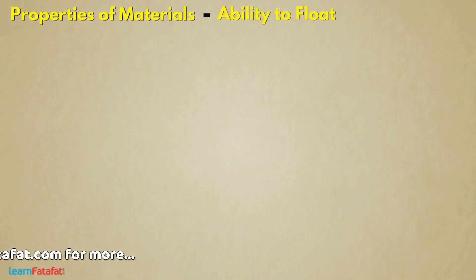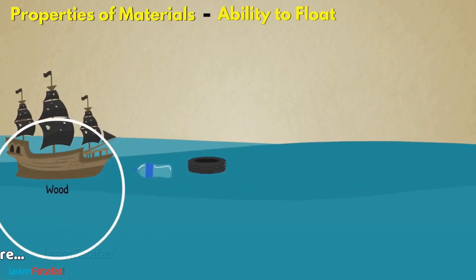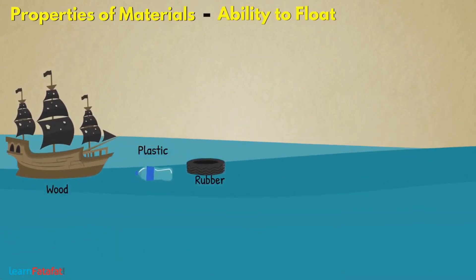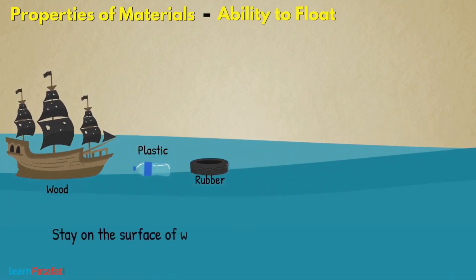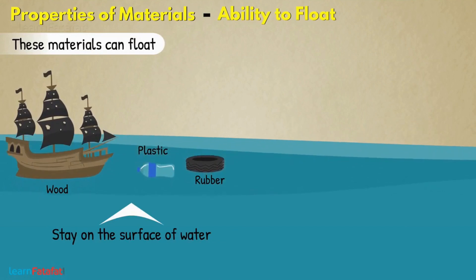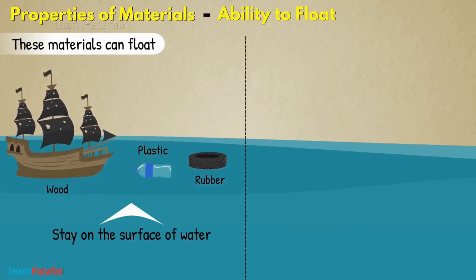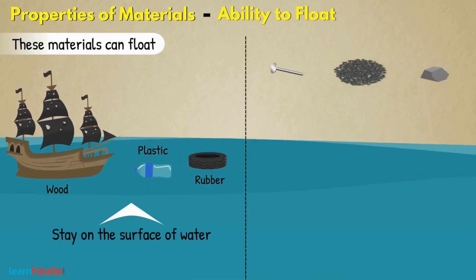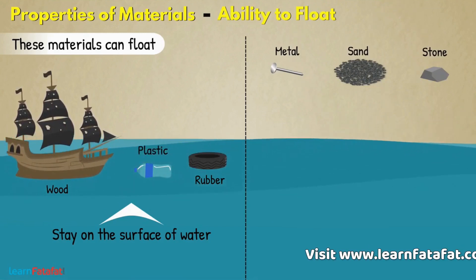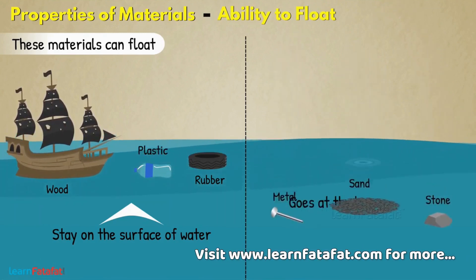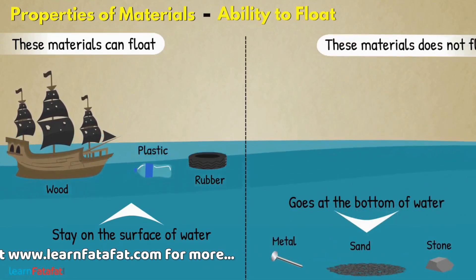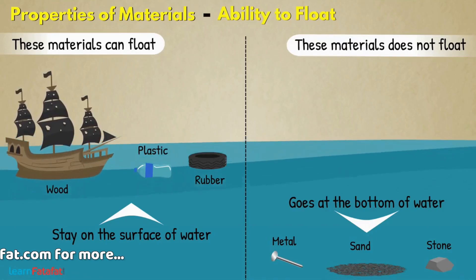Ability to float: Some materials such as wood, plastic, rubber, etc. have the ability to stay on the surface of water. We say that these materials can float on water. There are other materials such as metals, sand, stone, etc. which, when dropped in water, go to the bottom. That means these materials do not float on water.